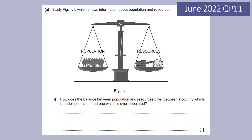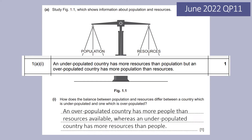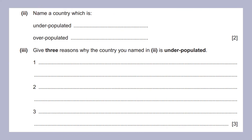Let's go through some examples. How does the balance between population and resources differ between an underpopulated and overpopulated country? Simply: an overpopulated country has more people than resources available, whereas an underpopulated country has more resources than people. Name a country which is underpopulated: Canada. Overpopulated: Nigeria.